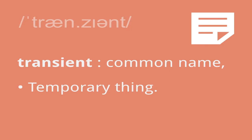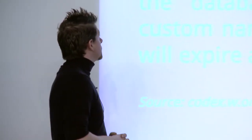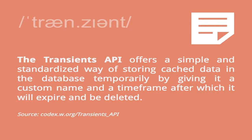In the end, the name means a temporary thing. What the codex tells us: the Transients API offers a simple and standardized way to store data in the database temporarily, with a time frame set, after which it will expire.